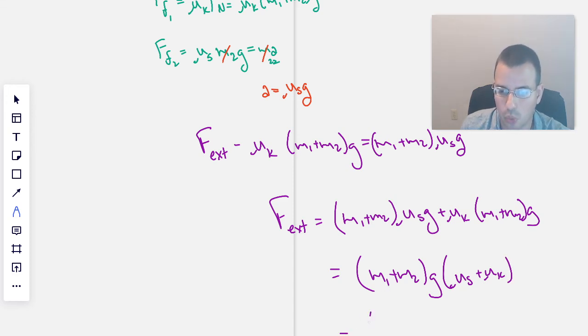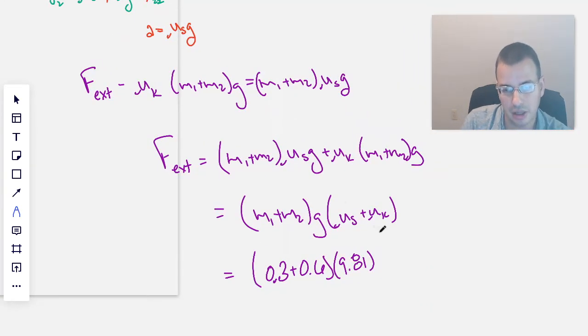Plugging in some numbers, mass 1 is 0.3 kilograms, mass 2 is 0.6 kilograms, gravity, we're going to assume is 9.81 meters per second squared, and then μ_s is 0.2, I think it's 0.3, it doesn't matter because we're going to use them both. And then μ_k is 0.2.